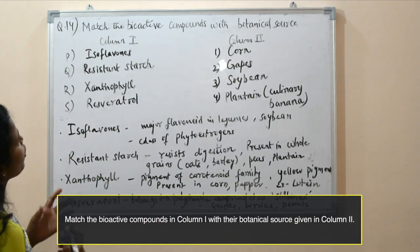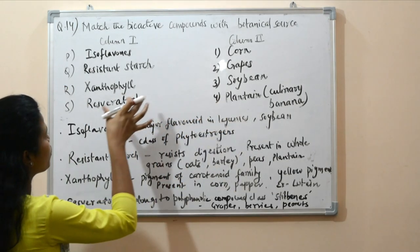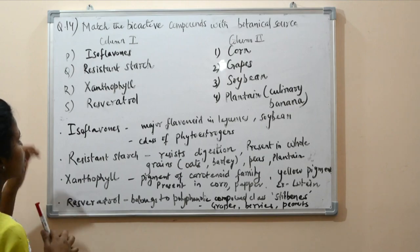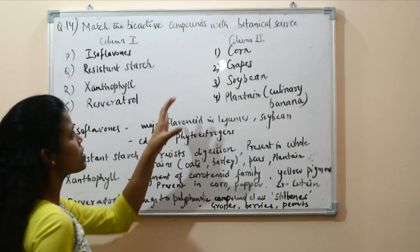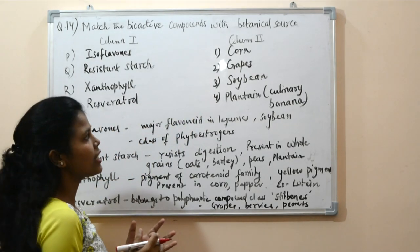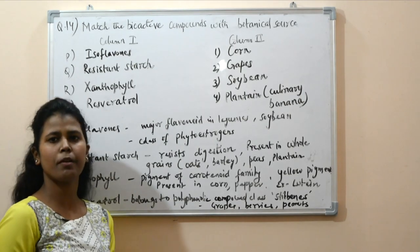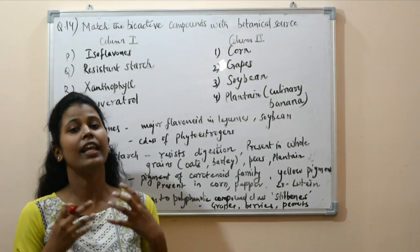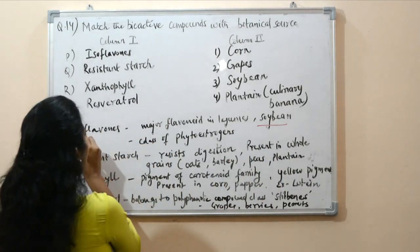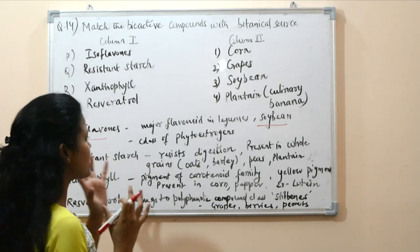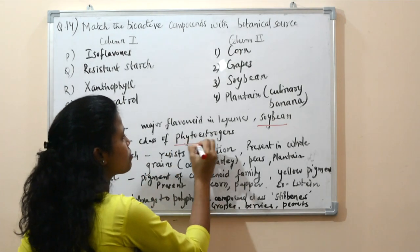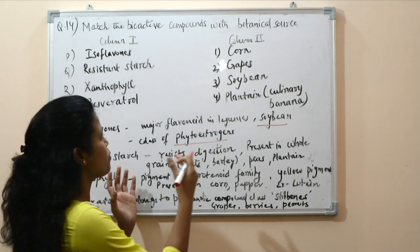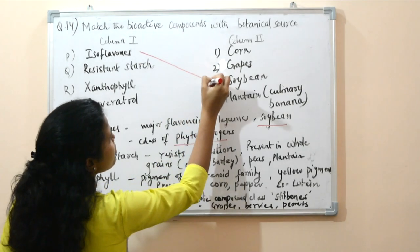Question number 14: match the bioactive compounds in column 1 with their botanical source in column 2. The bioactive compounds are isoflavones, resistant starch, xanthophyll, and resveratrol. The sources are corn, grapes, soybean, and plantain (a culinary banana used for cooking). First, isoflavones are major flavonoid compounds present in legumes and particularly in soybean. They belong to the class of phytoestrogens — plant-derived compounds with estrogen-like activity. So isoflavones come from soybean.